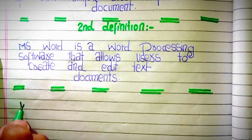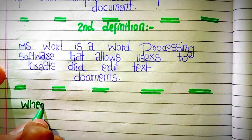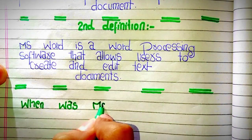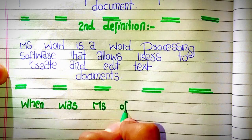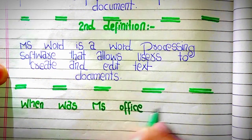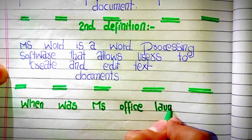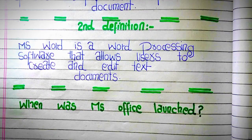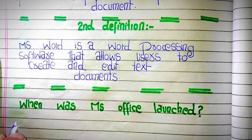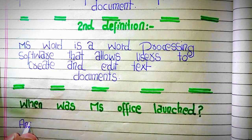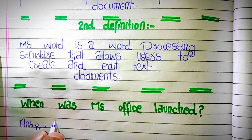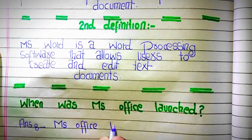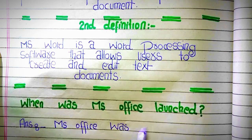The next question is: when was MS Office launched? The correct answer is MS Office was launched in October 1983.